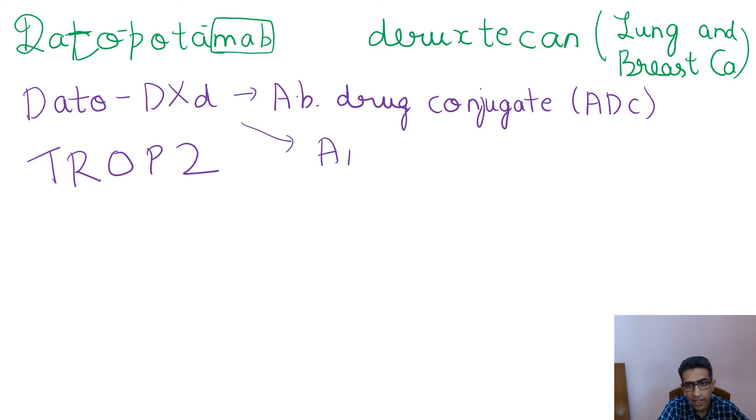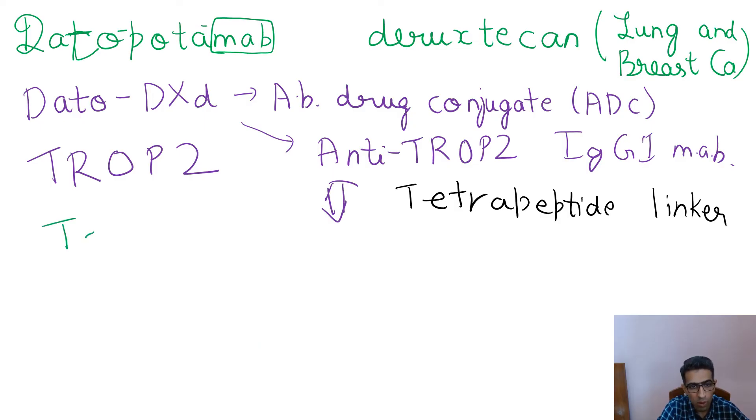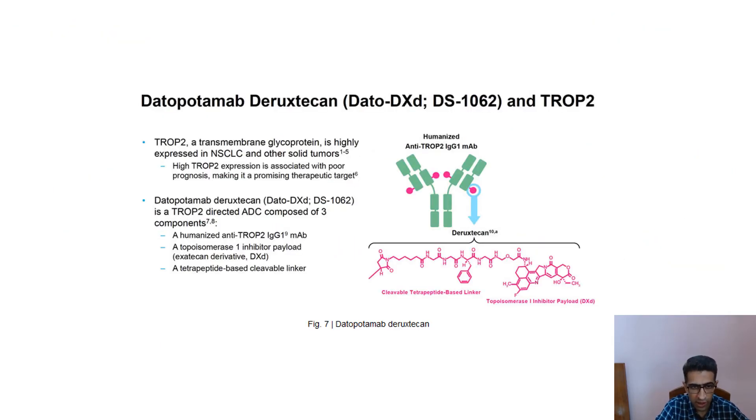Datopotamab is composed of humanized anti-TROP2 IgG1 monoclonal antibody linked to a cleavable tetrapeptide linker, which is connected to a topoisomerase 1 inhibitor payload - a derivative of camptothecin.